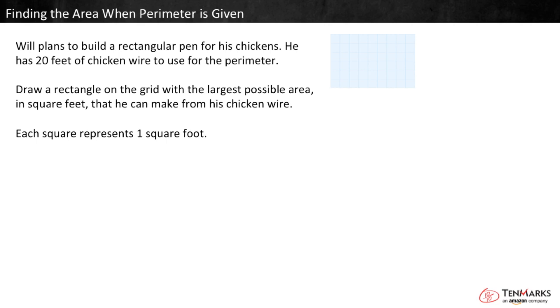To solve this problem, we need to look at all the rectangles with a perimeter of 20 and see which one has the largest area. Perimeter is the distance around a figure. So, to find it, we'll add length plus width plus length plus width.